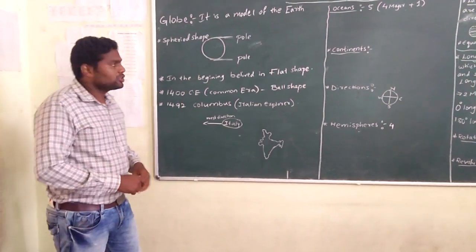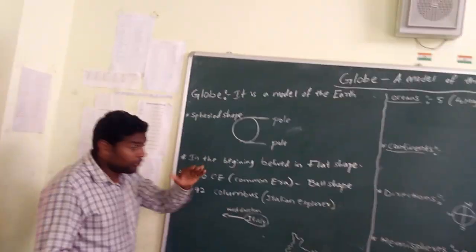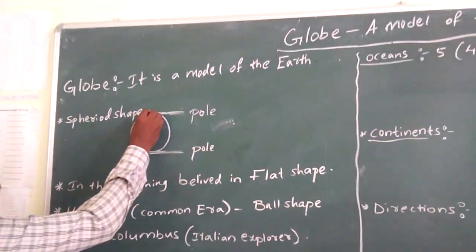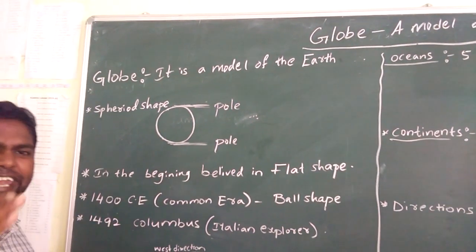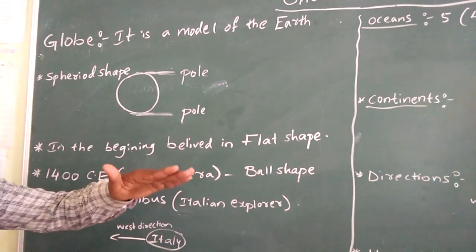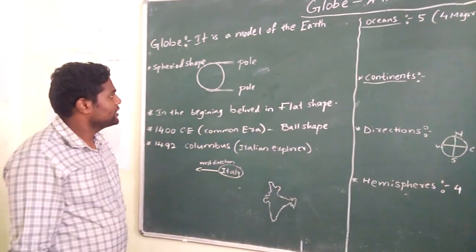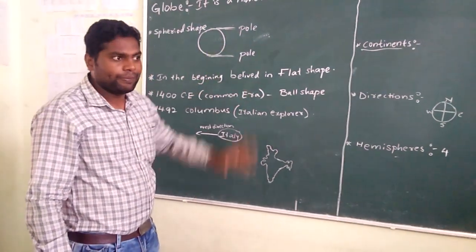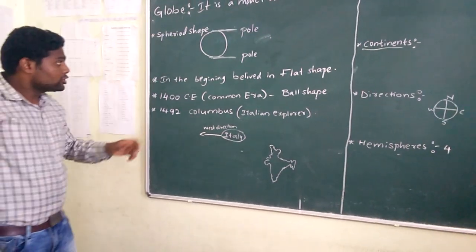So what is the shape of the earth? Sphere shape. One more thing you need to remember here — it is pressed at the poles and bulges in the middle. So when you see any globe, if you see the poles it has a little press, and if you see in the middle it is bulging out. So it is not the perfect sphere or perfect round shape, but we assume it is in the shape of a sphere.